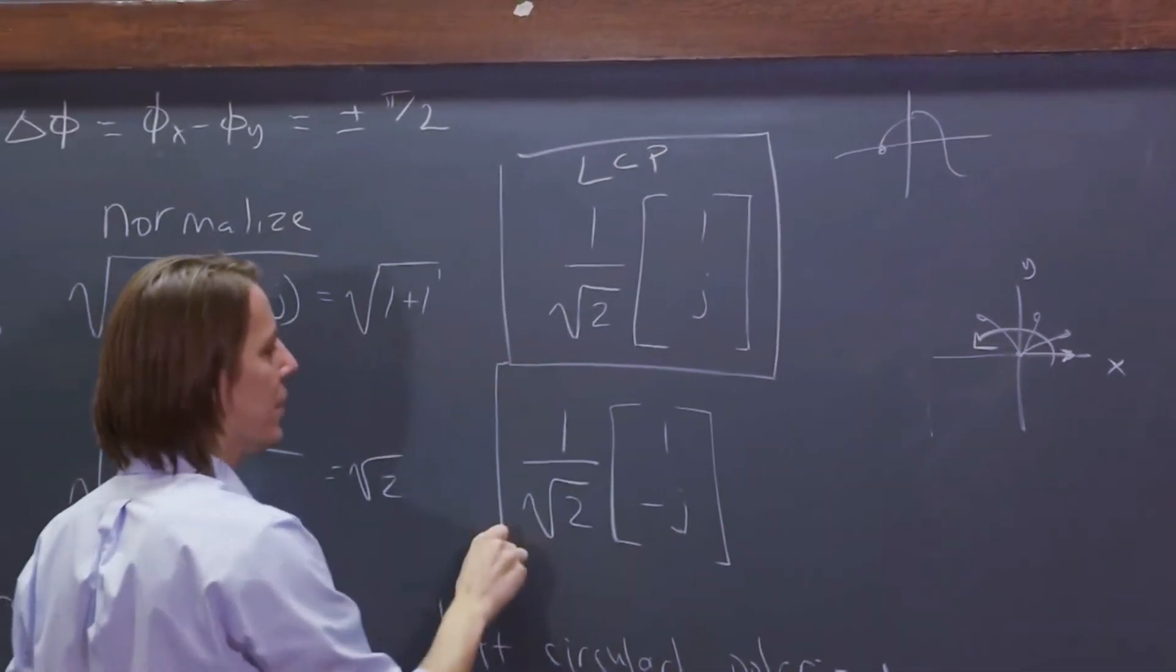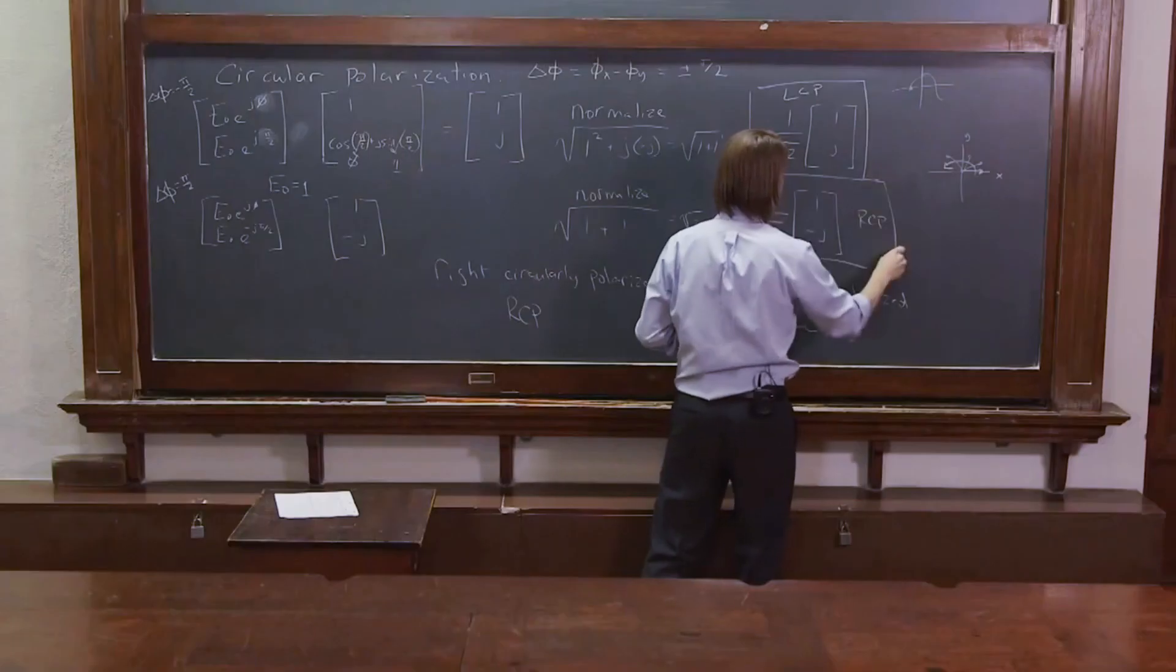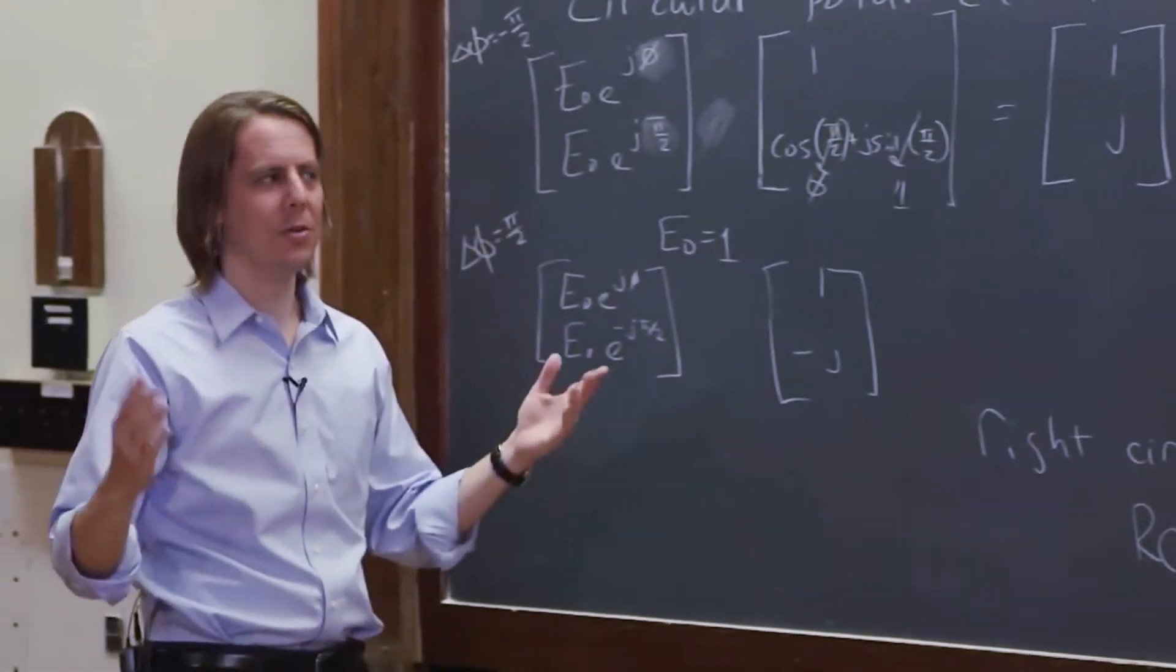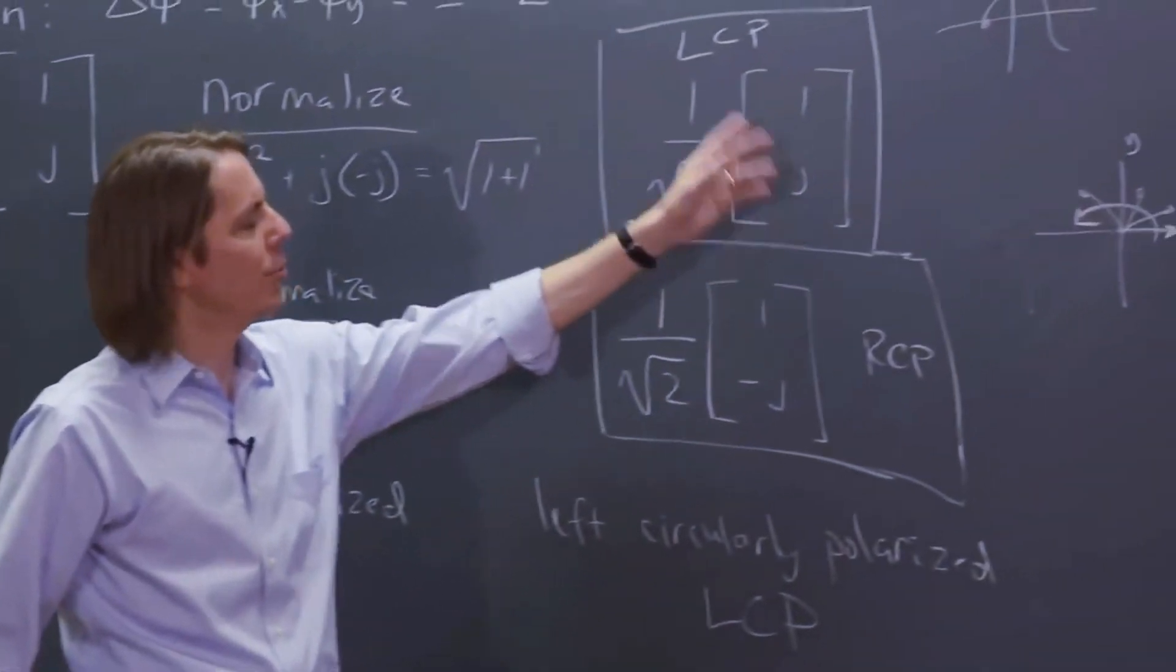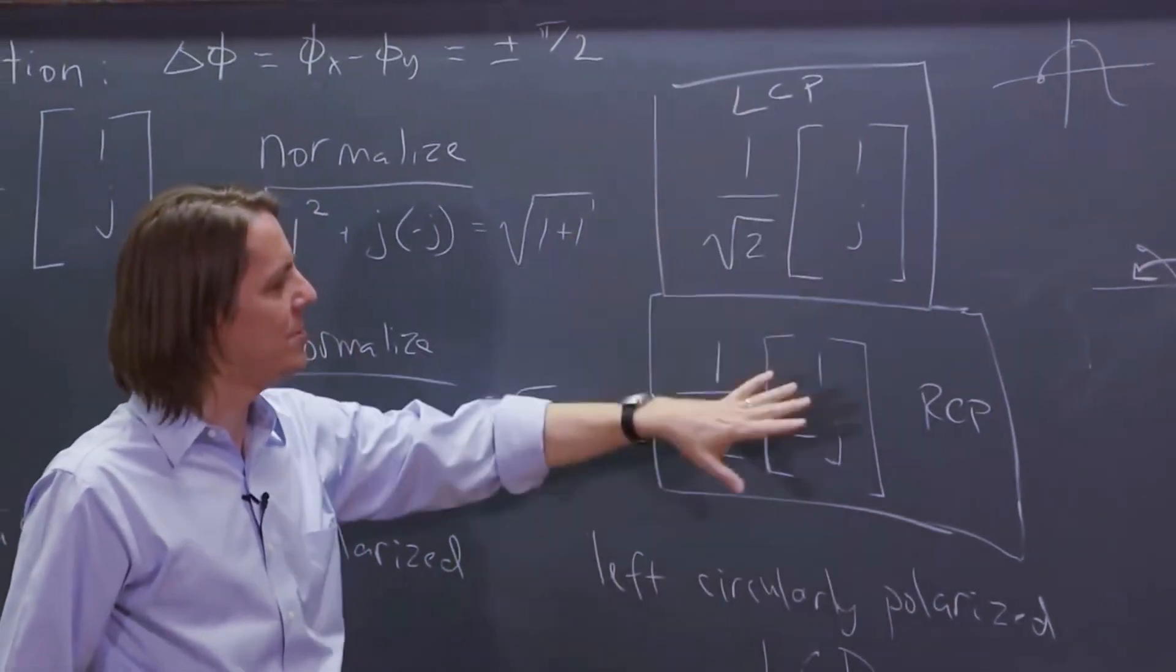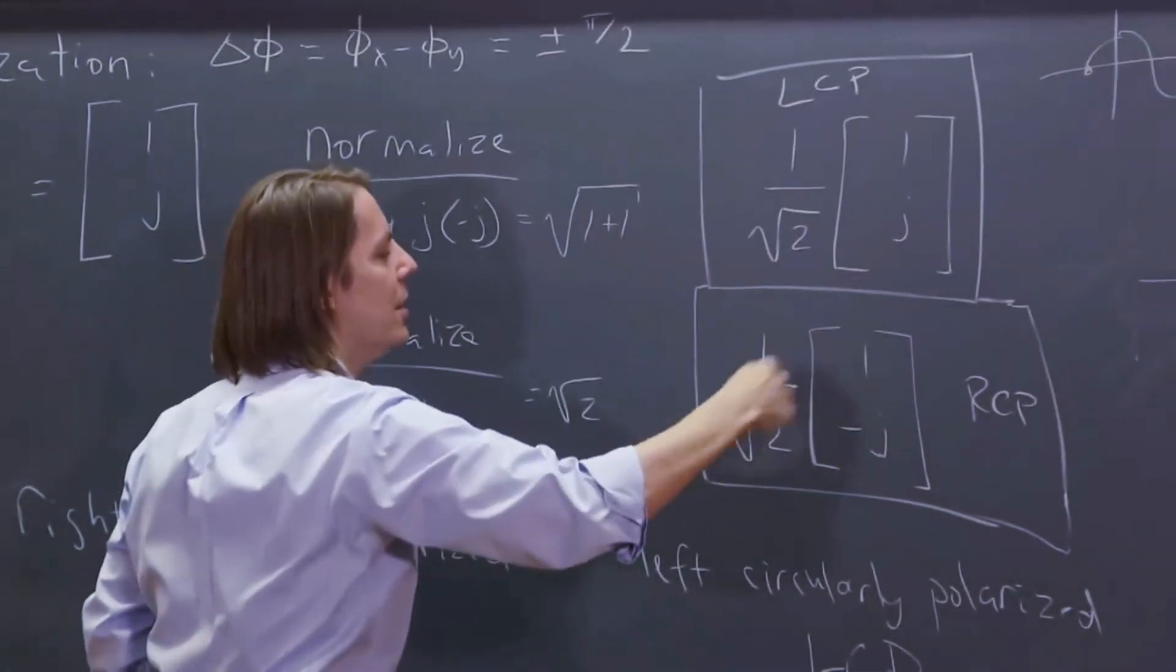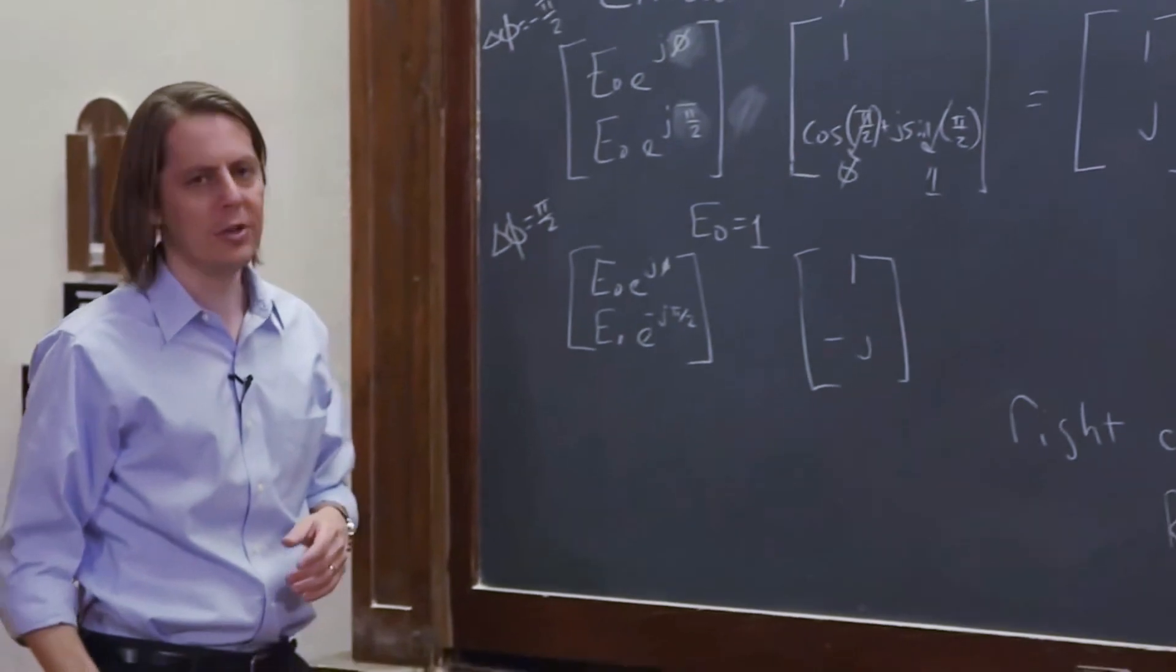And therefore, this must be RCP. Did I get that right? Yes. What do you know? It even works when you think your way through it. So yes, 1 over j is LCP. 1 over minus j is RCP. This one spins around this way, this one spins around that way. That's how you describe them with normalized Jones vectors.